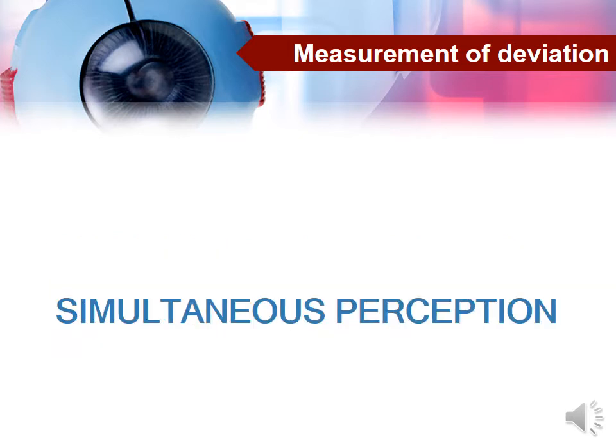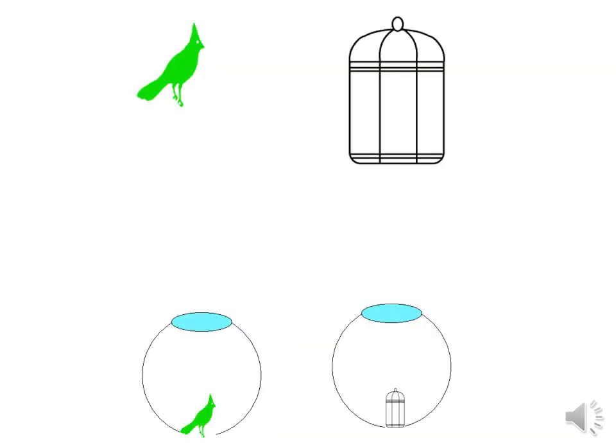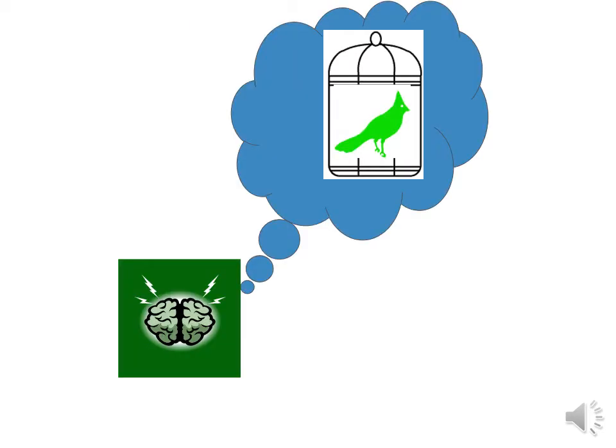The last principle is simultaneous perception, which refers to the ability of the brain to perceive the images of both corresponding retinal points at the same time. For example, if the image of a cage falls on the fovea of the right eye and the image of a bird falls on the fovea of the left eye simultaneously, the brain perceives both at the same time. Furthermore, since both images fall on corresponding retinal points (the foveas), the brain projects them to the same location and sees the bird inside the cage.